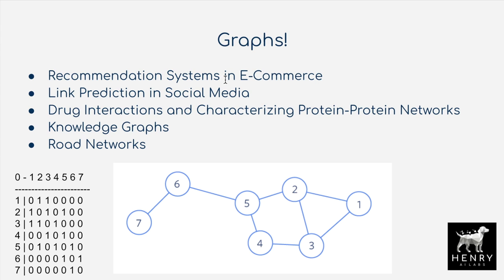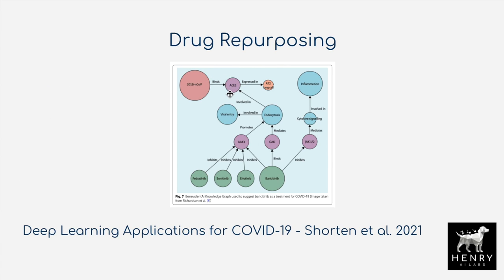Some examples could be recommendation systems in e-commerce — a user-to-item graph where users are connected to items, probably with a bipartite kind of structure. You could also have link prediction in social media, like a Twitter graph where edges represent follow relationships, where user seven and five follow six. In this case you might have undirected edges, like a friendship or a LinkedIn connection where it's reciprocal.